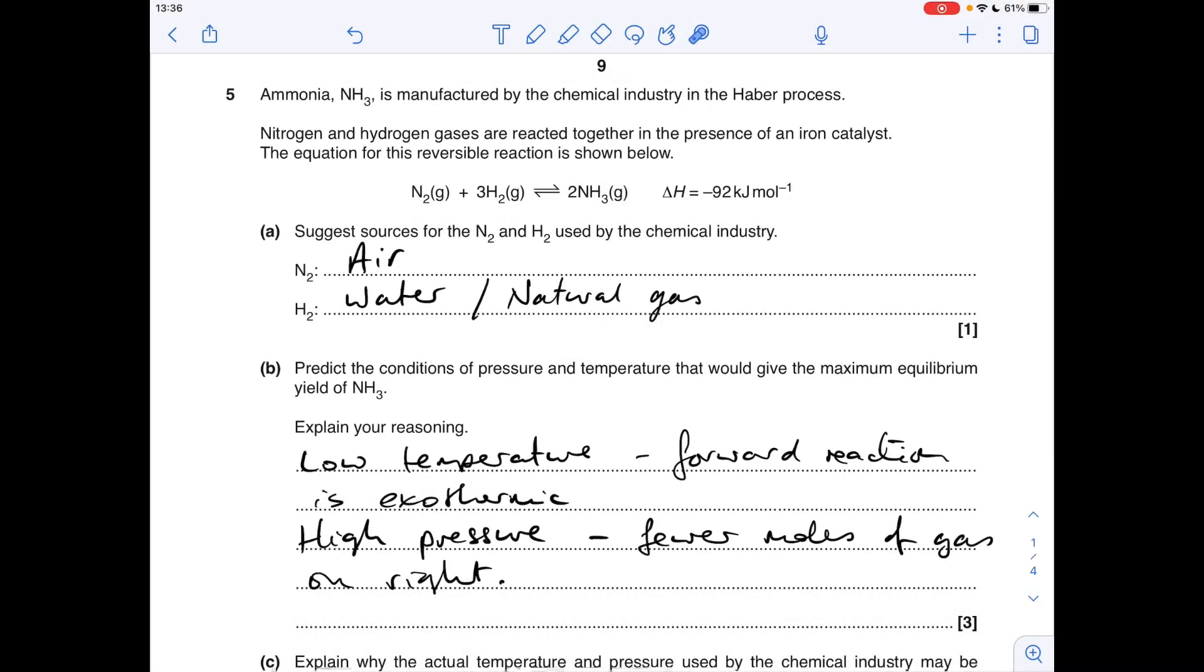Okay, so part A: suggest sources for the nitrogen and hydrogen used by the chemical industry. Nitrogen obviously is sourced from the air - 78% of the air is nitrogen. The obvious choice for hydrogen is water. You could have gone for natural gas CH4, which contains a high proportion of hydrogen.